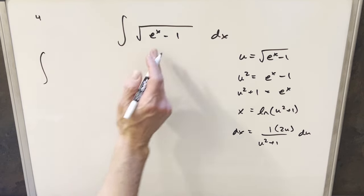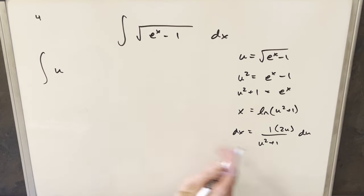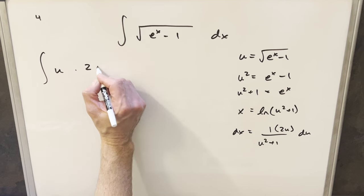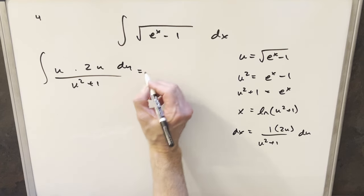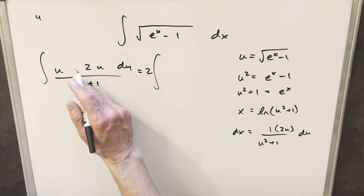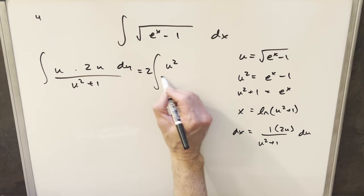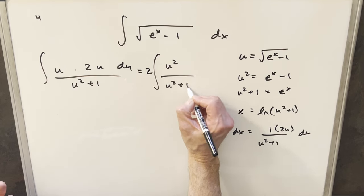Okay, so we'll just go ahead with this now. So again, this whole thing is u. dx is this, so we'll write this as two u du over u squared plus one. Then just cleaning this up a little bit, I'm going to take this two out front of the integral. u times u gives me u squared, and it's just going to be over u squared plus one.